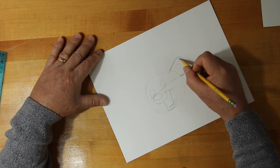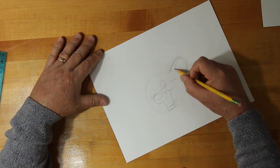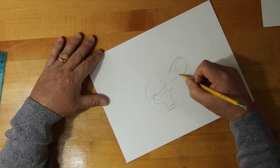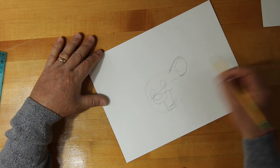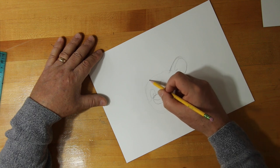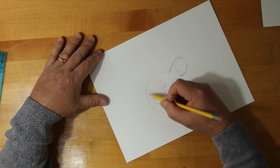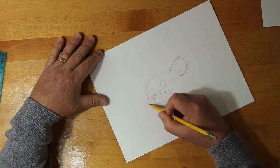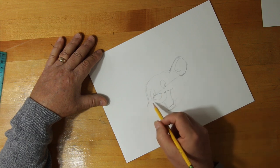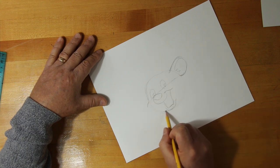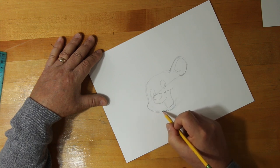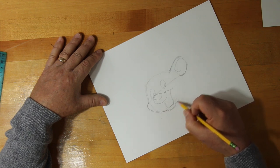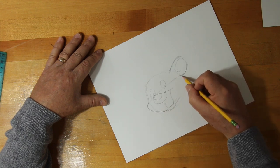And then we've got the inner portion of the ear. On this side, we've got to put in his little cheek. So his cheek comes out just a little bit and then it connects to the mouth. And it continues on this side to the ear.